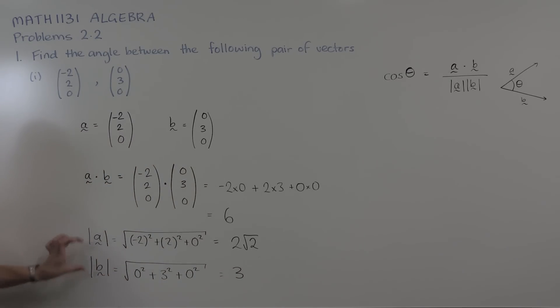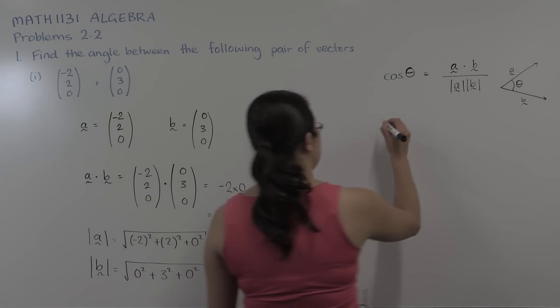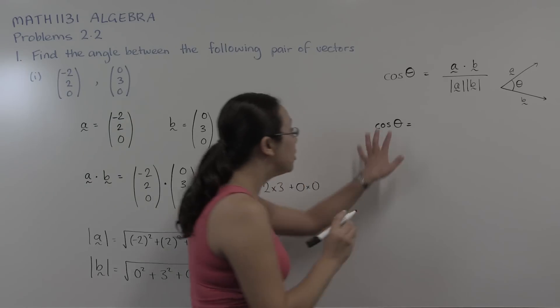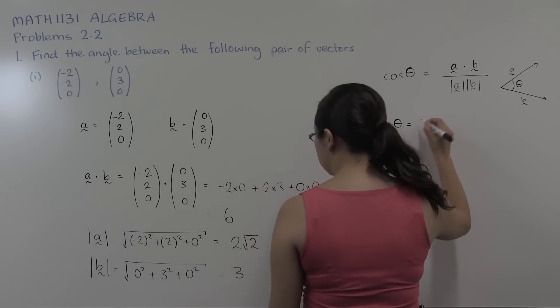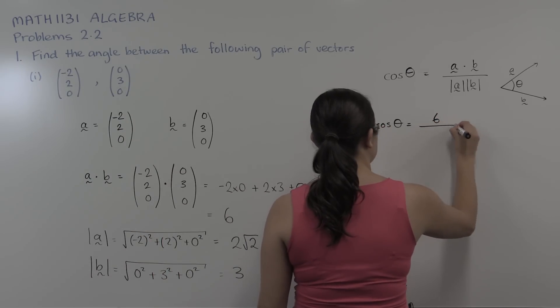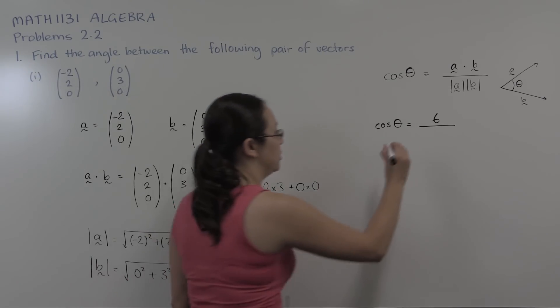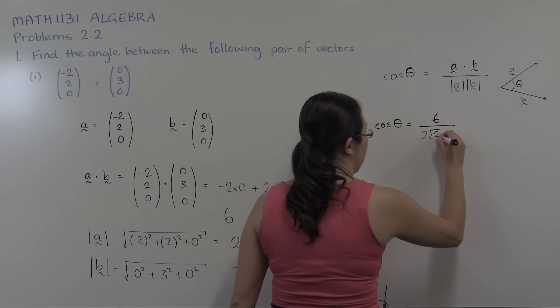So we have the dot product and we have the length of each of our vectors. Now we just need to substitute that into our formula to calculate cosine of the angle between those two vectors. So our dot product here is six divided by the length of our two vectors, two root two and three.